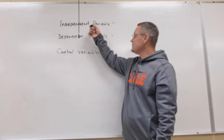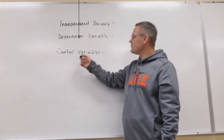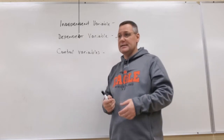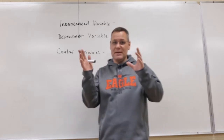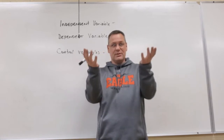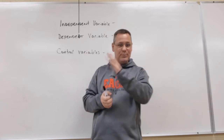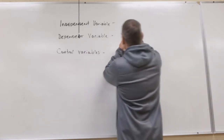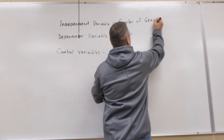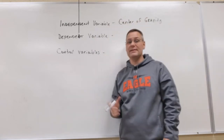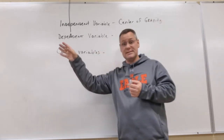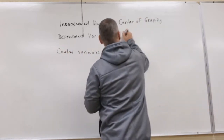There are independent variables, dependent variables, and control variables. Independent variables are the thing in the experiment that we are changing. In this experiment, we're going to make the front, the back, or the middle of the paper airplane heavy — that's called the center of gravity, where the balance point is. So our independent variable is the center of gravity. The dependent variable is the thing we measure, which in this case is distance.